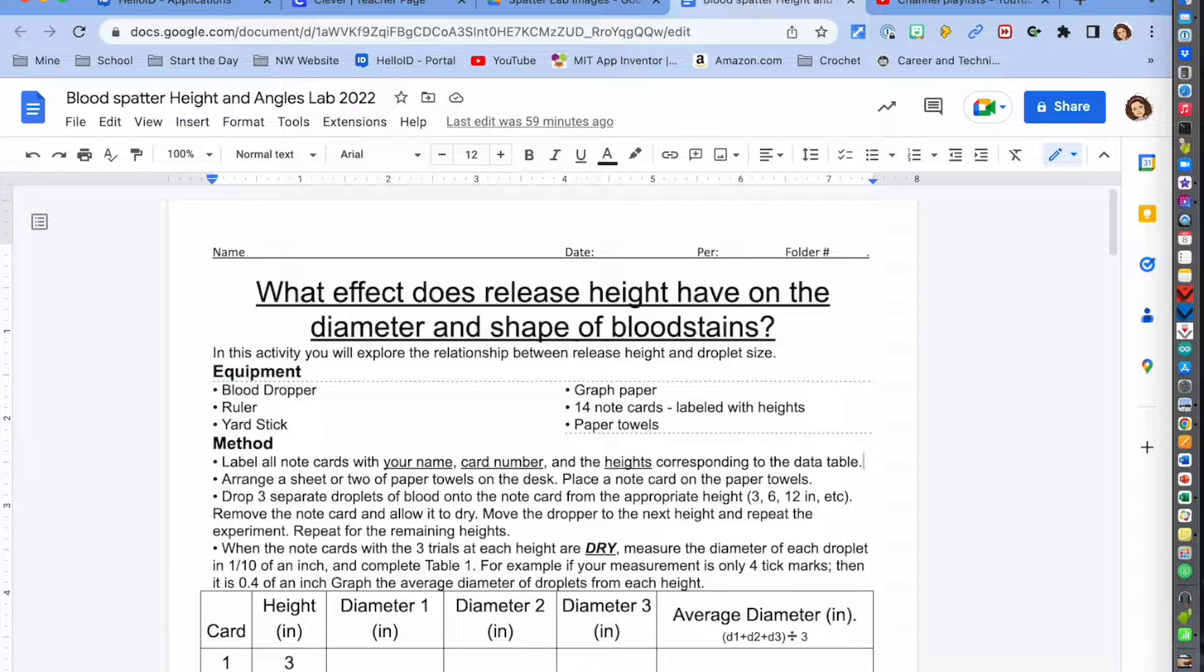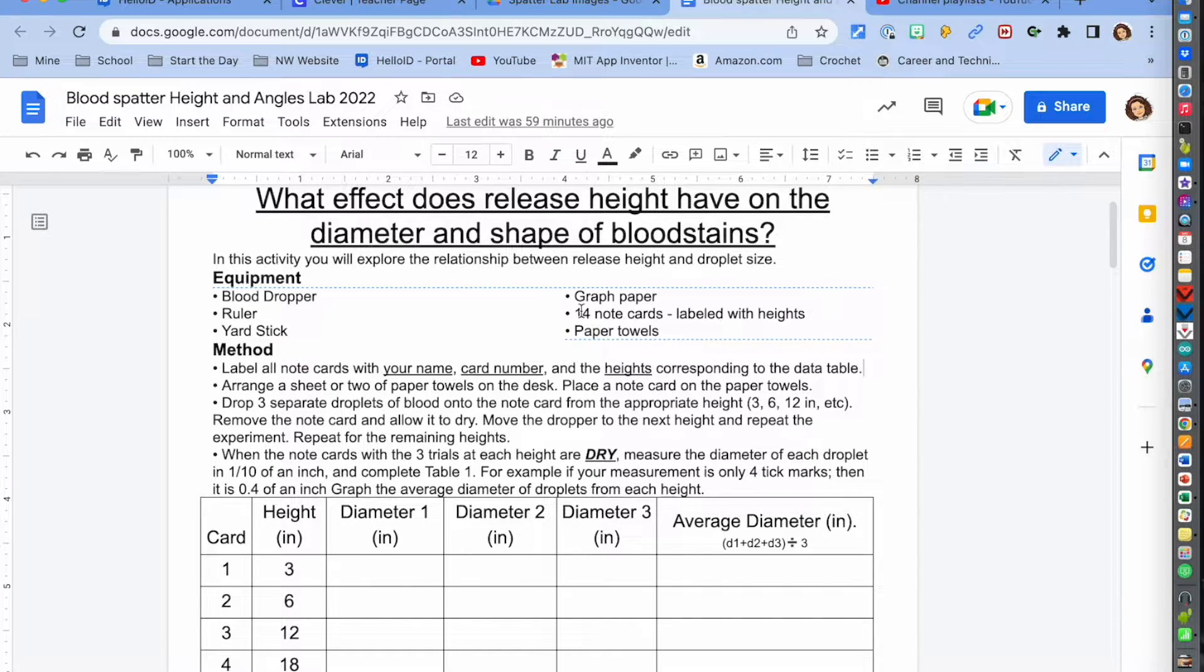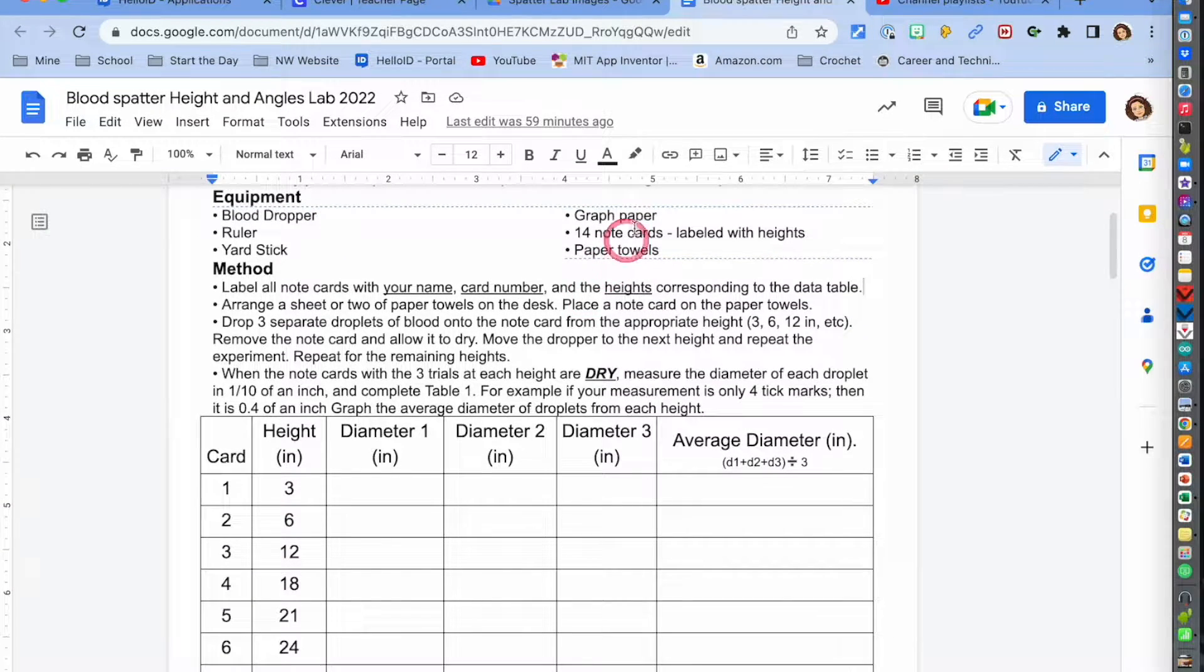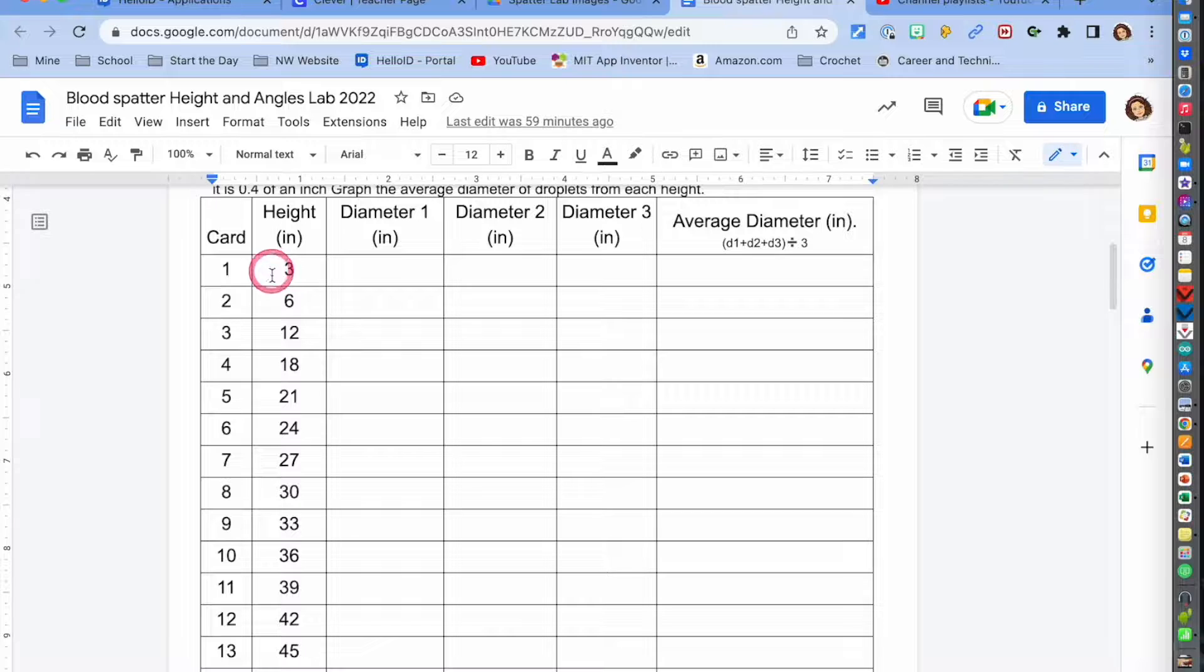Hello guys, this is Ms. Sesamal and we're doing a blood spatter and angles lab. The first thing you're going to need is some 3x5 note cards and you'll need about 14 of them because each note card here is a different height.